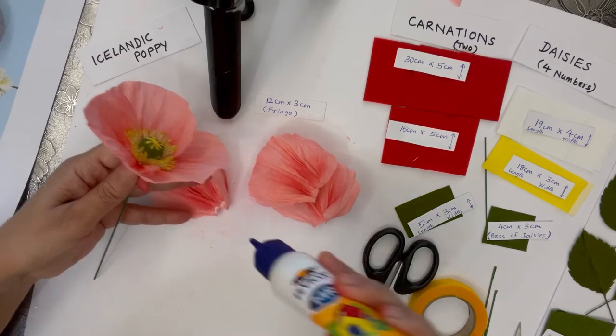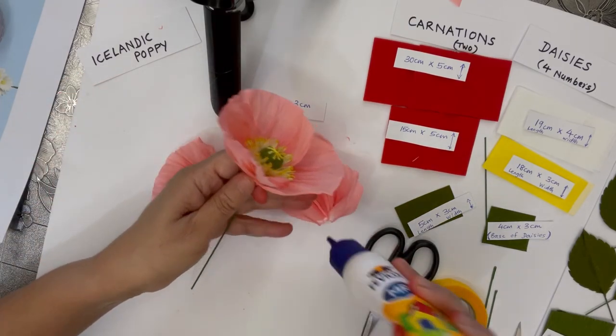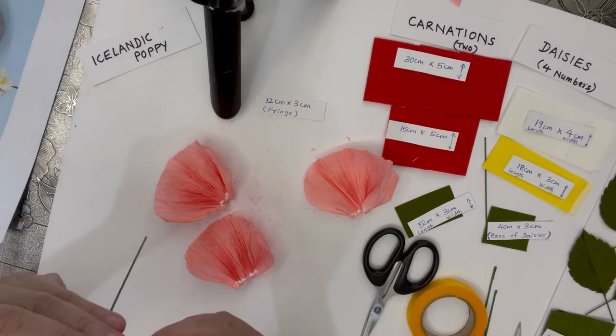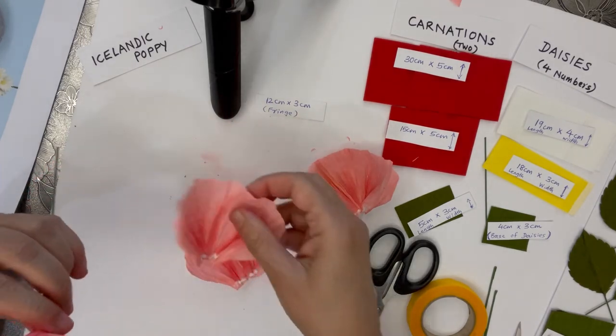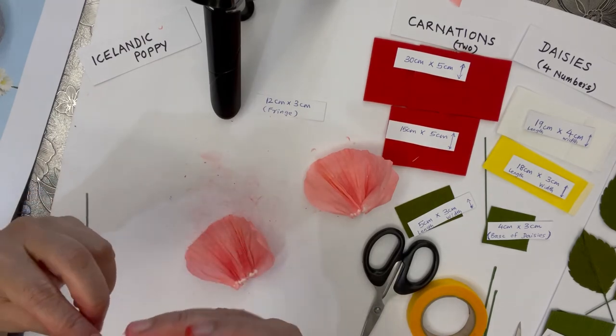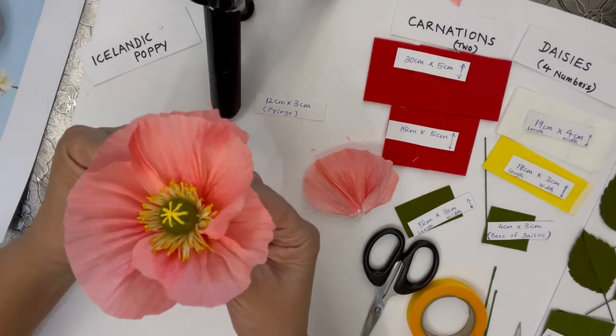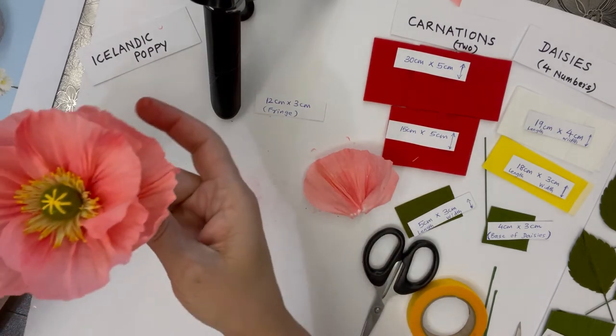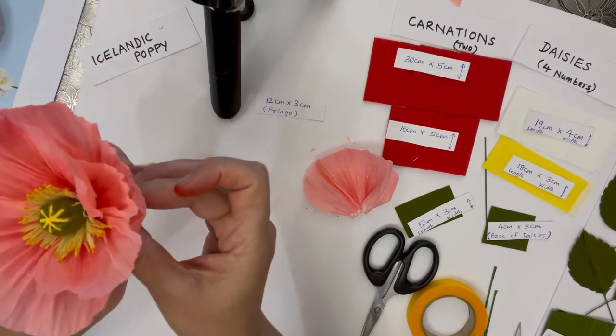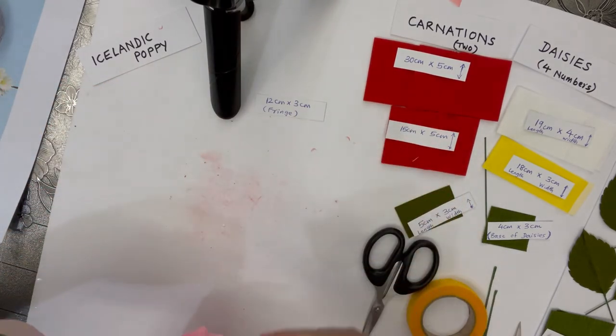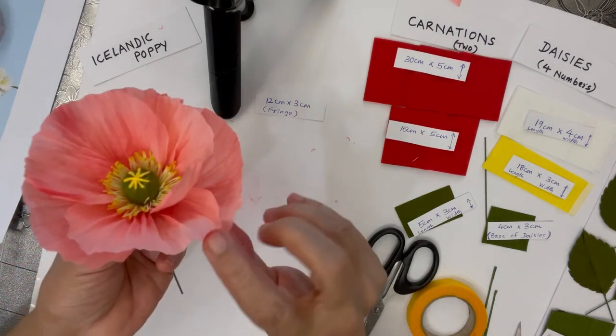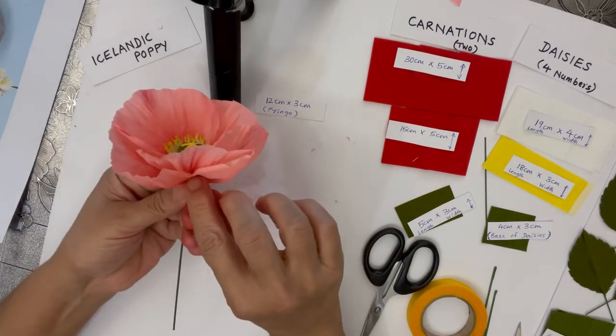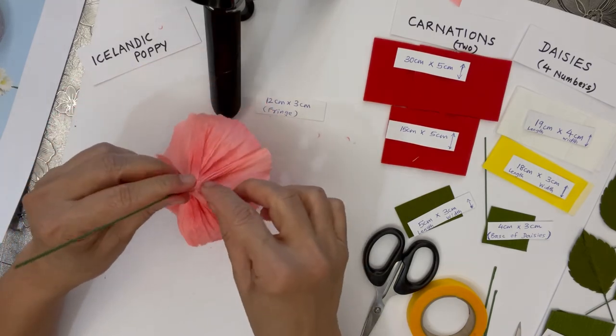These larger ones will go at the base. Hold it tightly from the bottom. You can turn the flower and see wherever you can find a gap or you think there's more space, you can press the petal over there. Some part of it is overlapped. This is how the base will look.